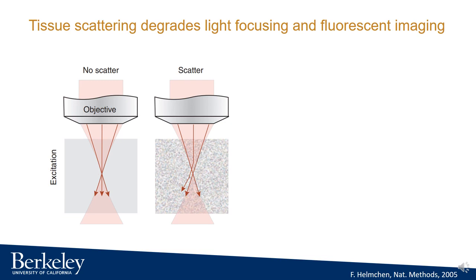However, when focusing through a tissue, light is scattered, and the focus is not as small as the case without scattering, but becomes a much larger spot. So the resolution of photostimulation is lower.